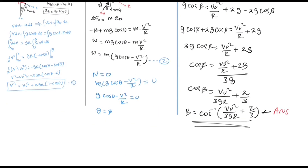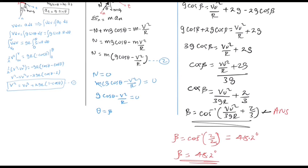For the second case, when the initial velocity V₀ equals zero: β = cos⁻¹(0 + 2/3) = cos⁻¹(2/3), which evaluates to approximately 48.2 degrees. So beta equals 48.2° when the vehicle starts from rest. This completes the overall solution to the given problem.